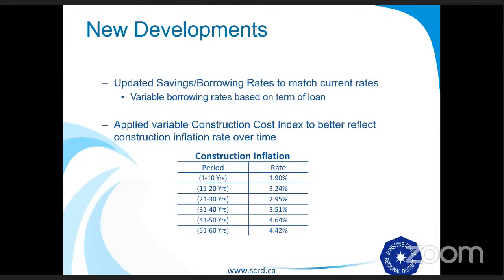As part of the annual review process, we've updated the savings and borrowing rates to match the current rates. We also introduced variable borrowing rates based on the expected term of the loan. This allowed us to look at the impact of a future loan being a 10-year loan or a 25-year loan and how that affected the capital model. One of the main concerns we heard in the past was that our inflationary index was too high. We went back through all the data and, to try to reduce that number, we've introduced a variable construction cost index. This pegs the amount of time in the future the expected work is to occur with an inflation rate that matches the historical rate, just to reduce any inflationary effects that are unnecessary where possible.